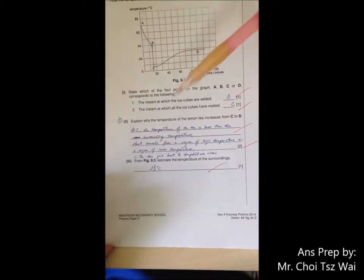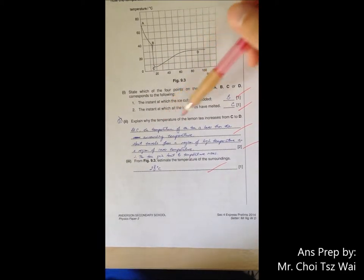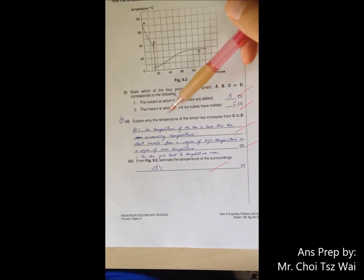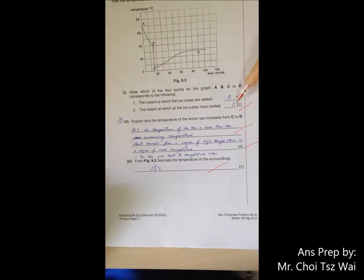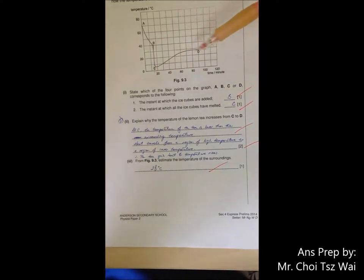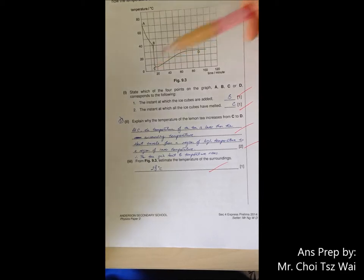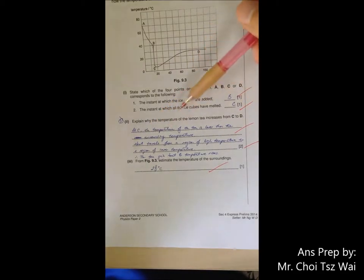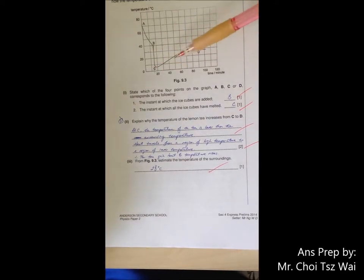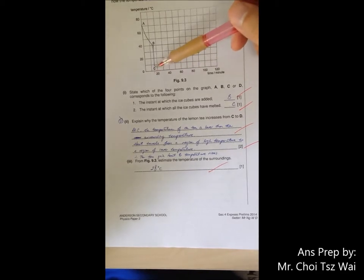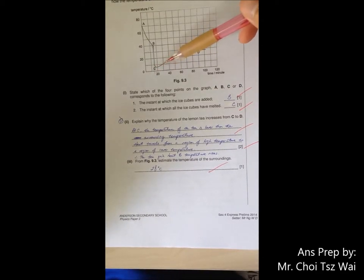Part 2, explain the temperature change from C to D. Since you already say that the ice has melted at C, the change from C to D is actually because C is below the surrounding temperature. So therefore, because heat always travel from a region of high temperature to low temperature, and since the tea is now at a lower temperature than the surrounding, the tea is going to absorb heat energy from the surrounding until the temperature of the tea reaches the surrounding temperature.